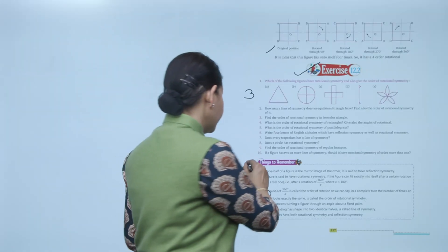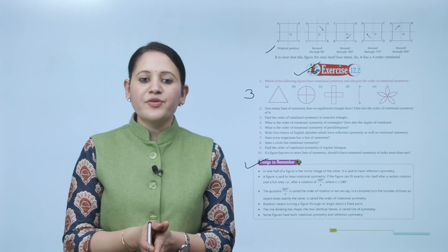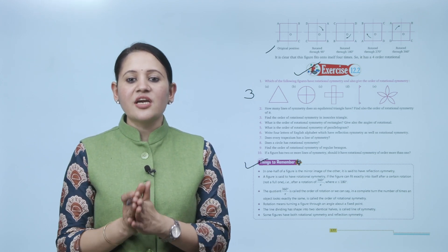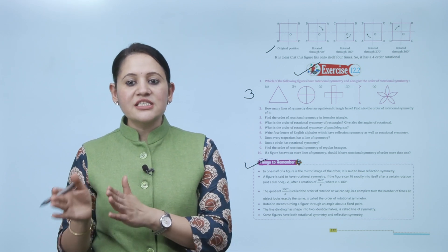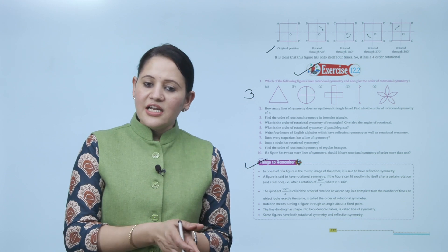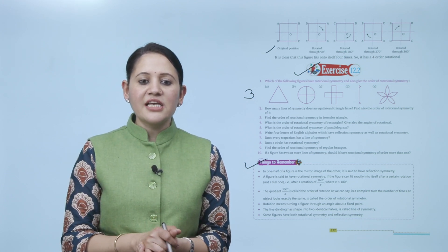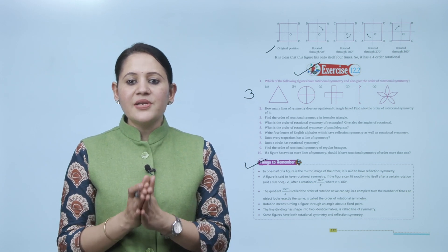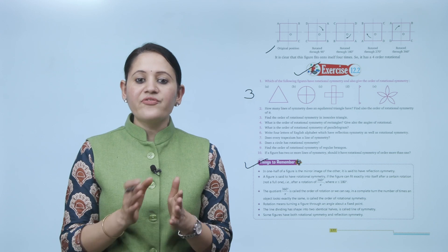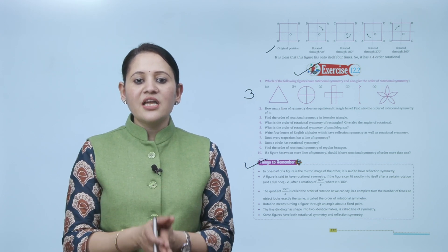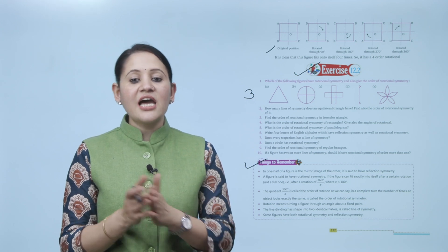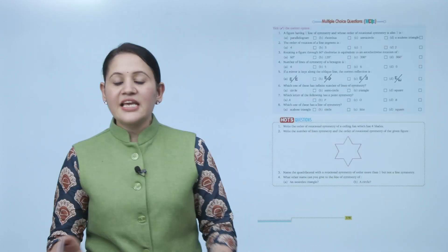Things to remember: If one half of the figure is the mirror image of the other, it is said to have reflection symmetry. A figure is said to have rotational symmetry if it can fit exactly into itself after a certain rotation — not the full 360 degrees, but a rotation of 360 degrees divided by x, where x is less than or equal to 180 degrees. The quotient 360 degrees divided by x is called the order of rotational symmetry. A line dividing a shape into two identical halves is called a line of symmetry. Some figures have both rotational symmetry and reflection symmetry.